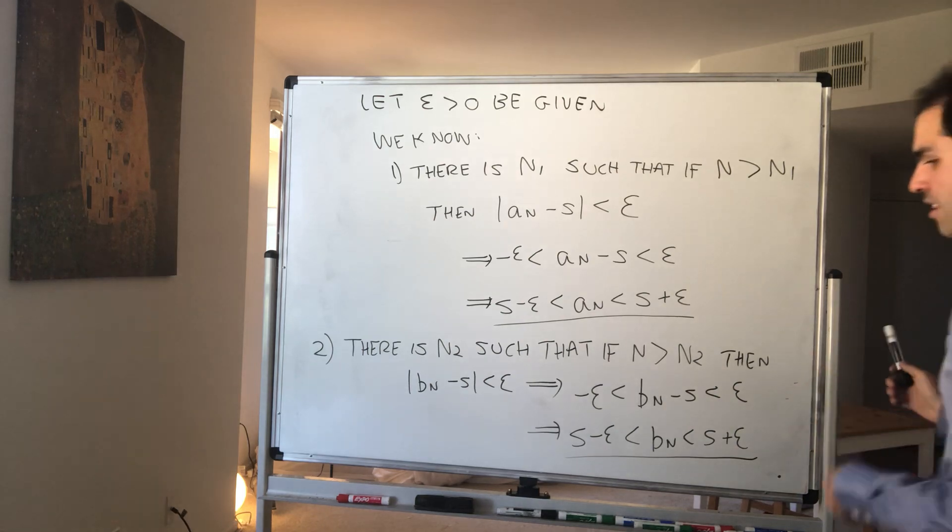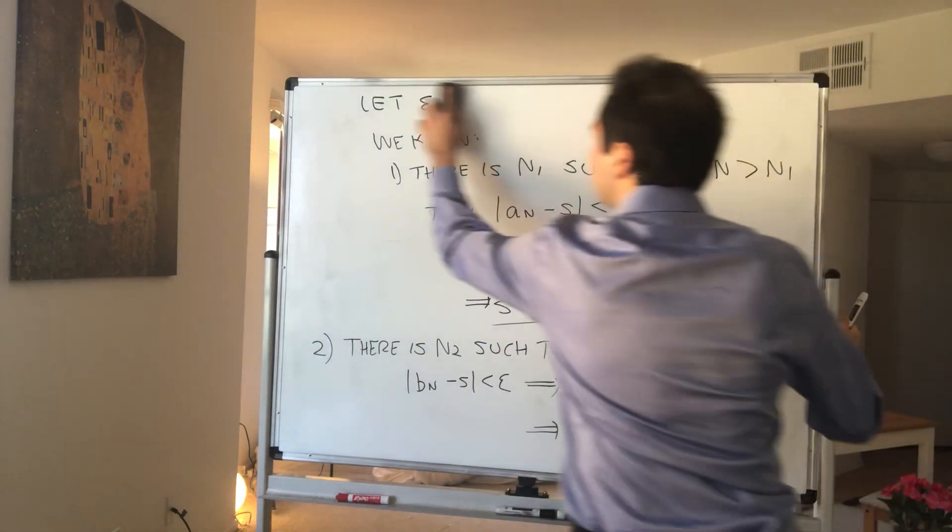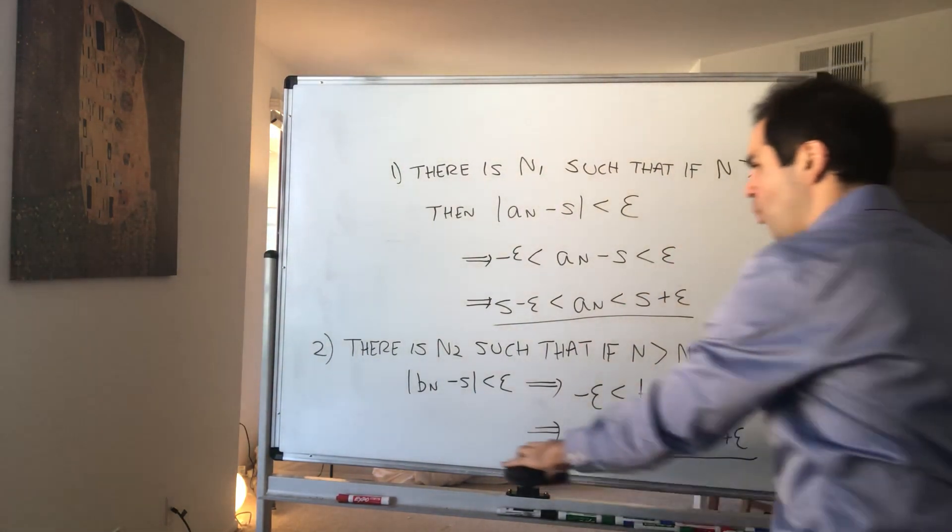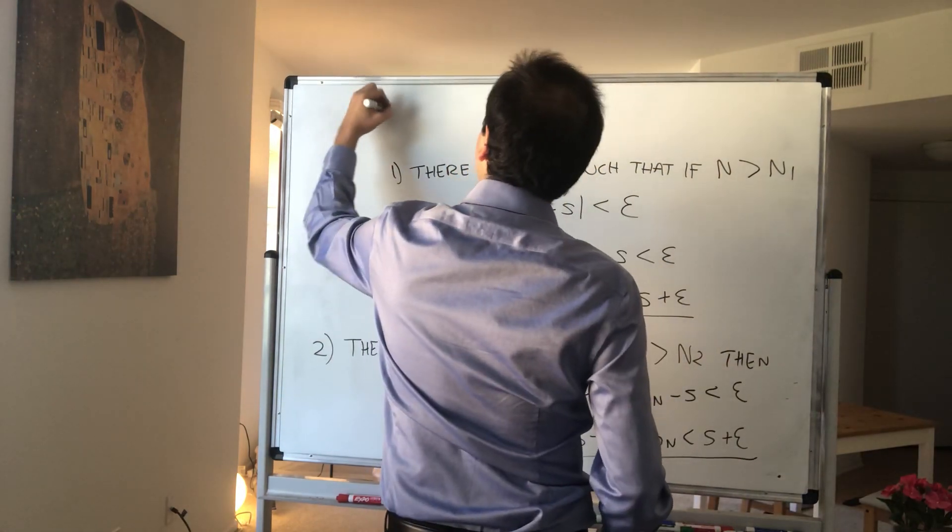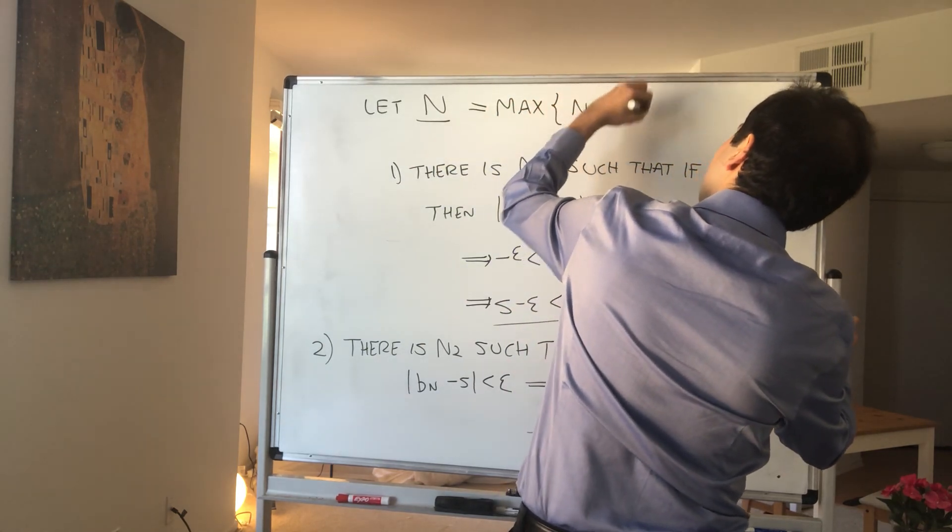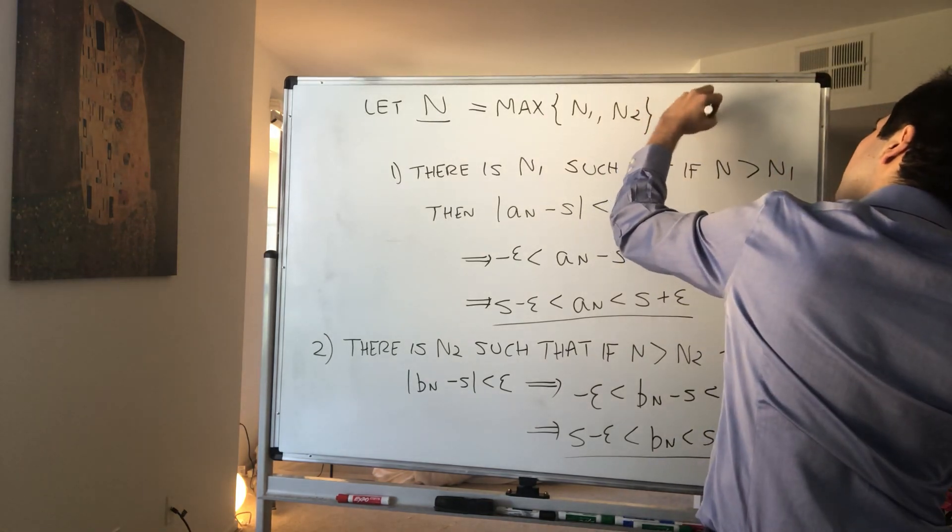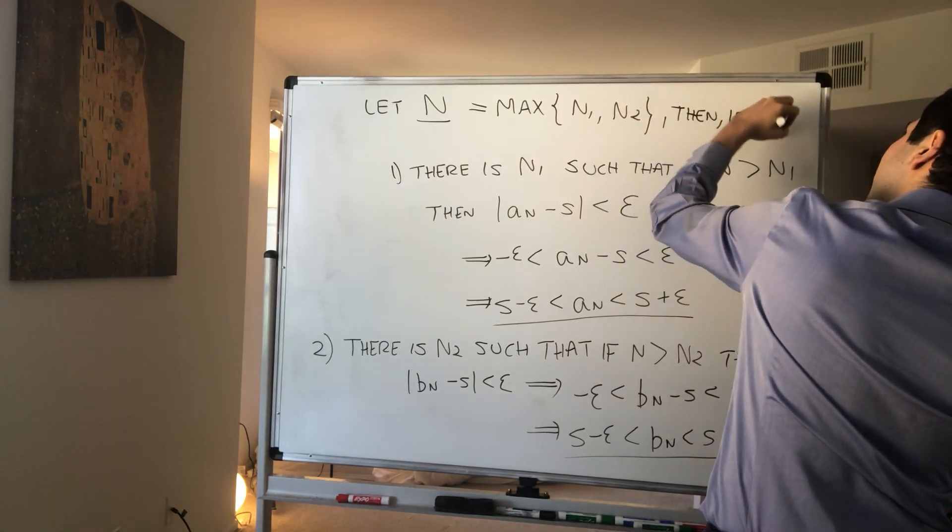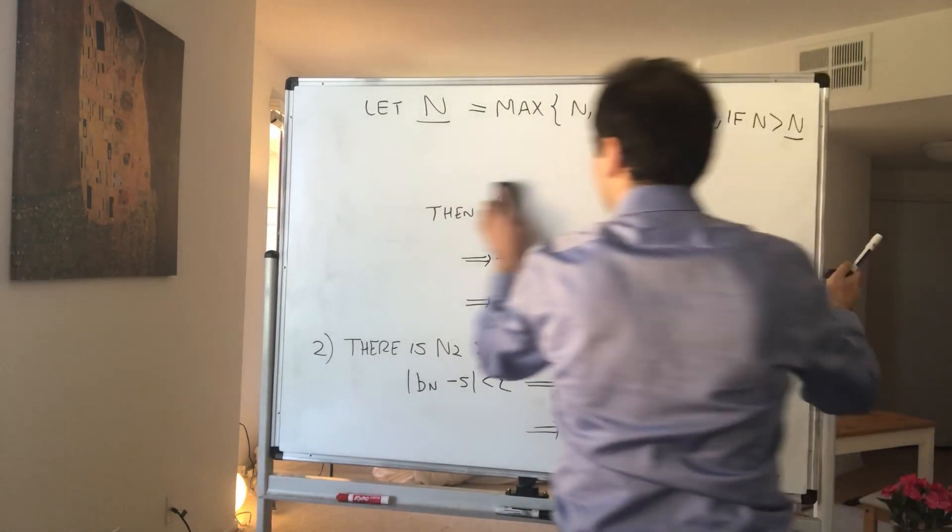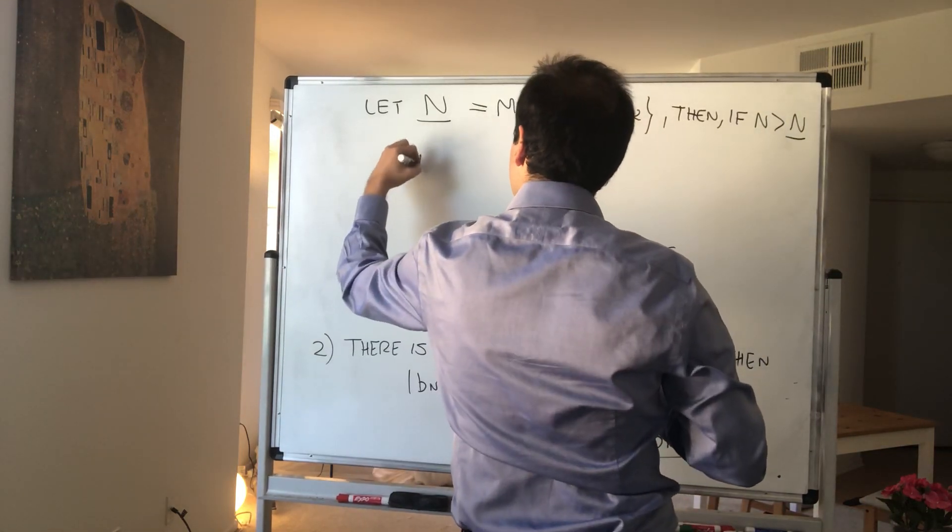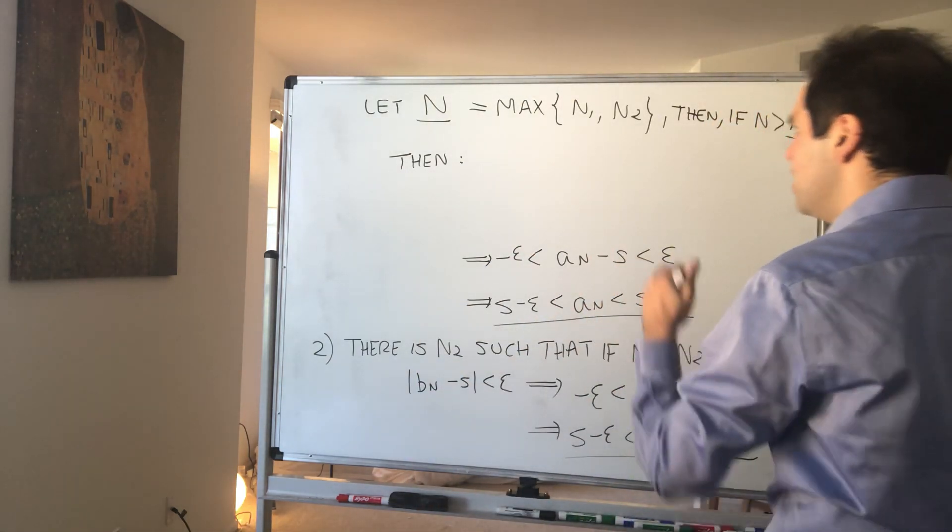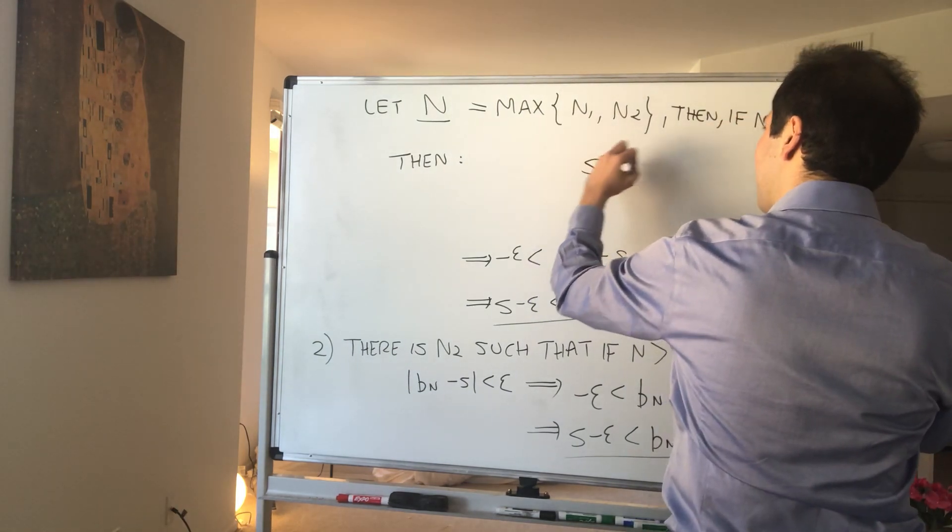And then the rest is just combining those inequalities. Since we want both things to happen, you choose the maximum of N1 and N2. So let N be the maximum of N1 and N2. Then if n is bigger than capital N, then what do we get? Then what we want to show is that s_n minus s is small. So let's look at s_n minus s.